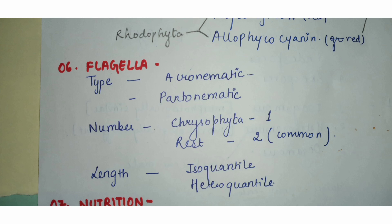On the basis of number, algae may be uniflagellate — having only one flagella, which is a common characteristic of the group Chrysophyta. Most other common algal forms have two flagella. According to length, they are called isokont — where both flagella are of similar length — or heterokont, where they are of different lengths.